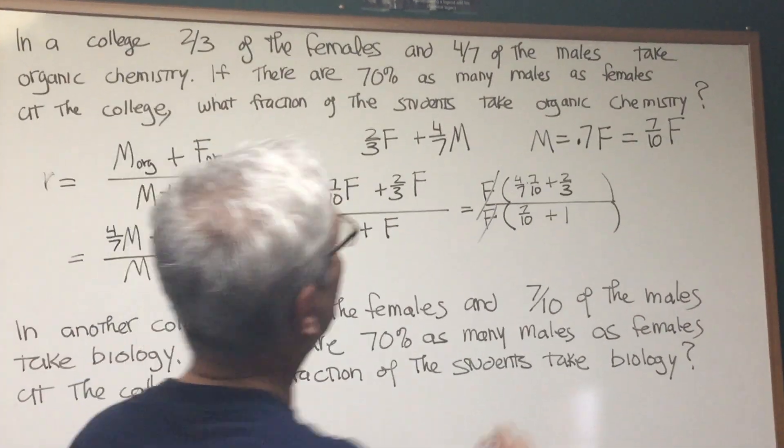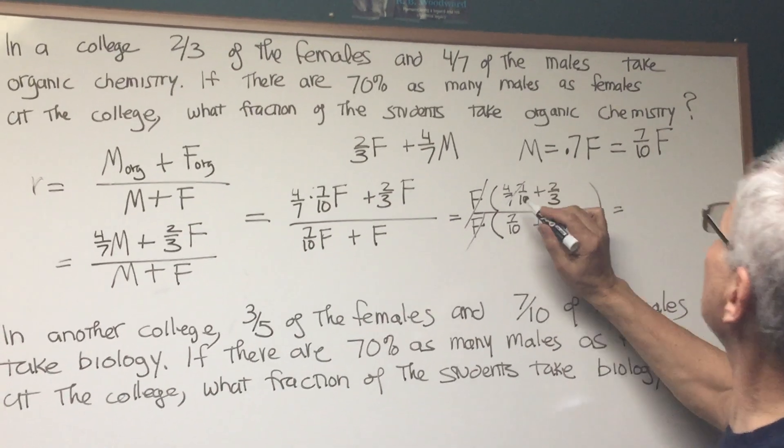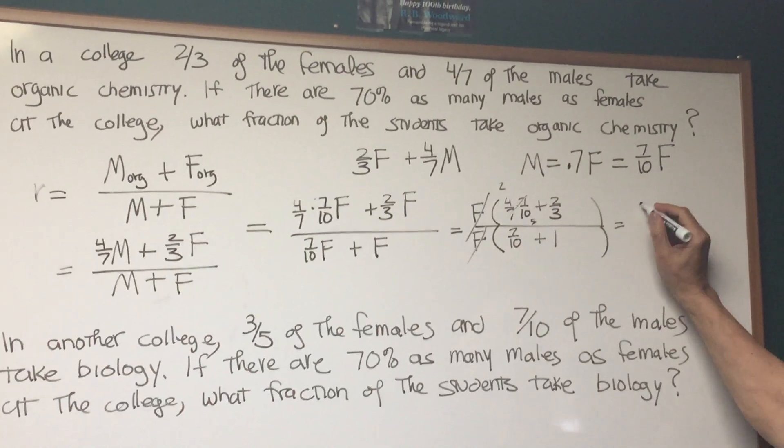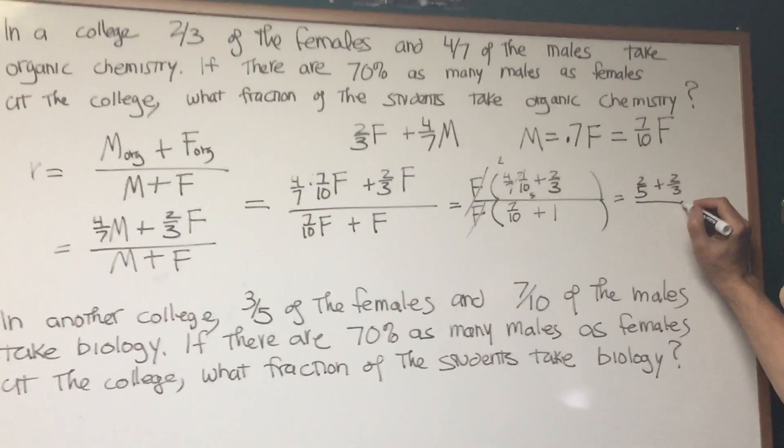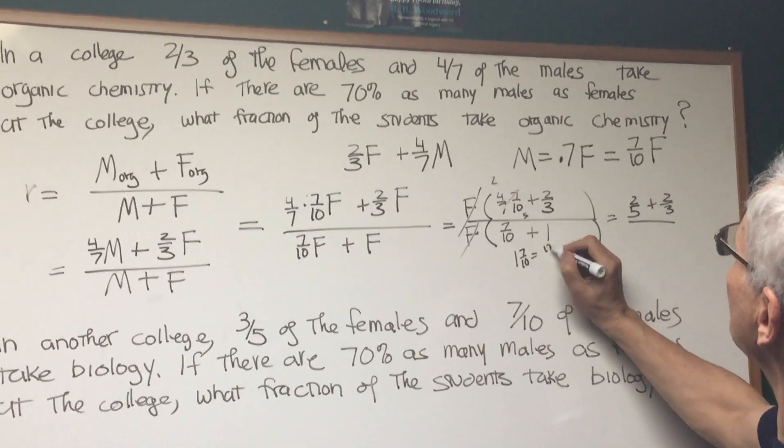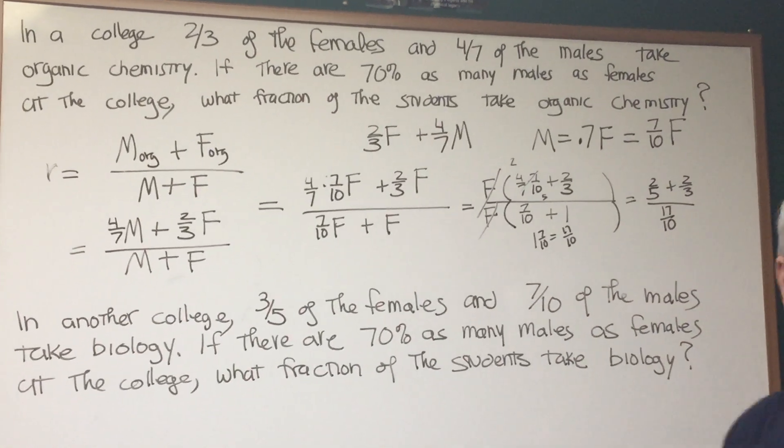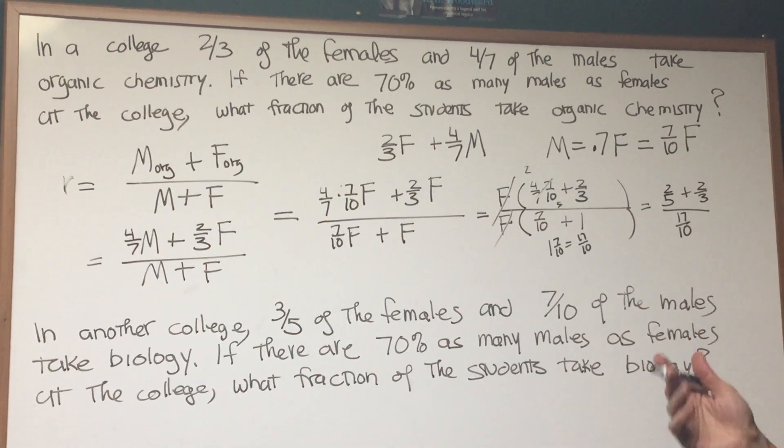I think you can see if you factor f out of the numerator and factor f out of the denominator, the value f cancels out, and we're just left with fractions to simplify. So we have four-sevenths times seven-tenths plus two-thirds, and in the denominator seven-tenths plus one. So all the variables cancel out. The seven is going to cancel out. Four over ten gives me two over five, and we have two-fifths plus two-thirds divided by seventeen over ten.